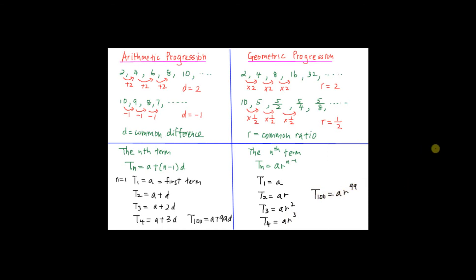These two formulas — for AP: tn = a + (n−1)d, and for GP: tn = ar^(n−1) — are given in your SPM formula list.